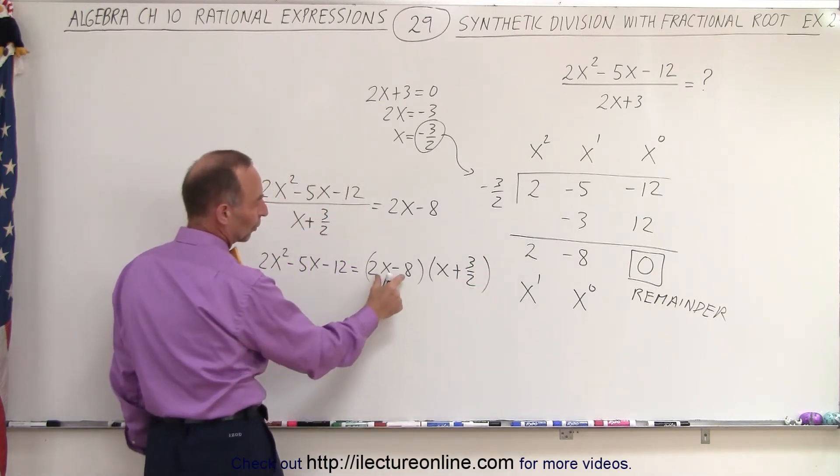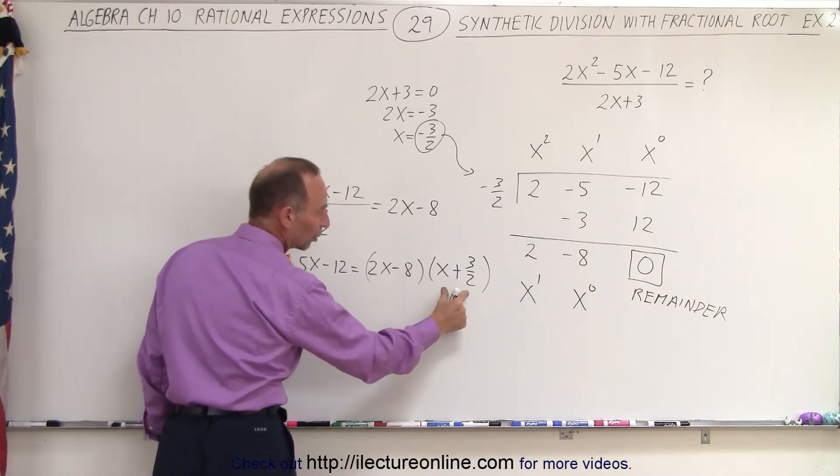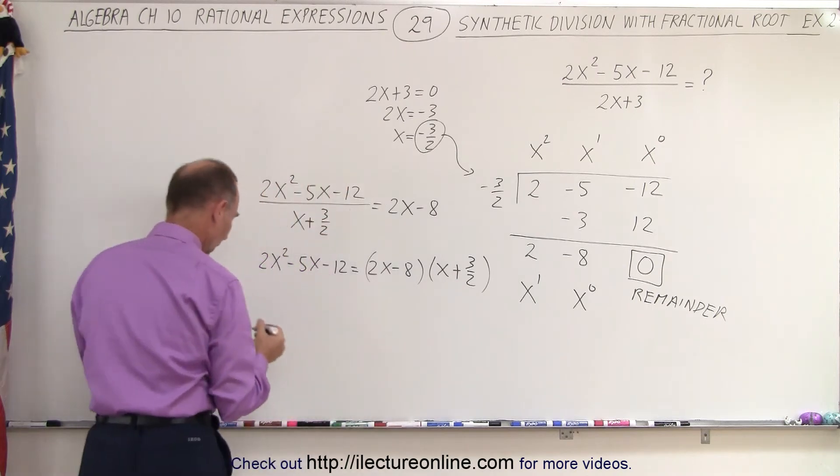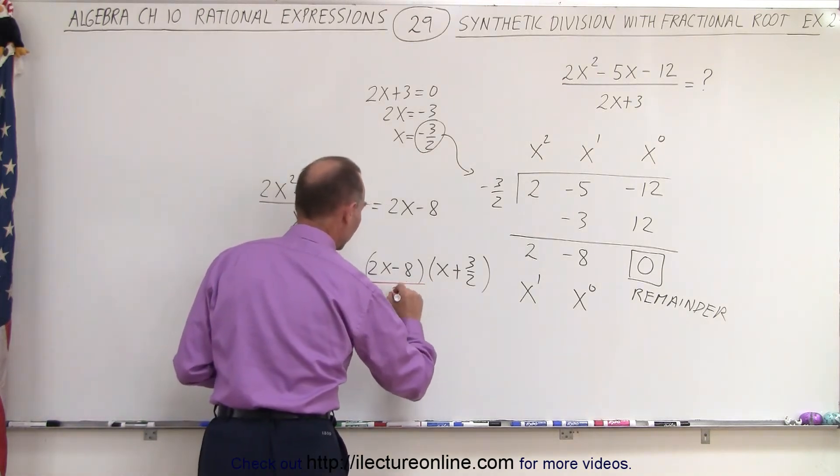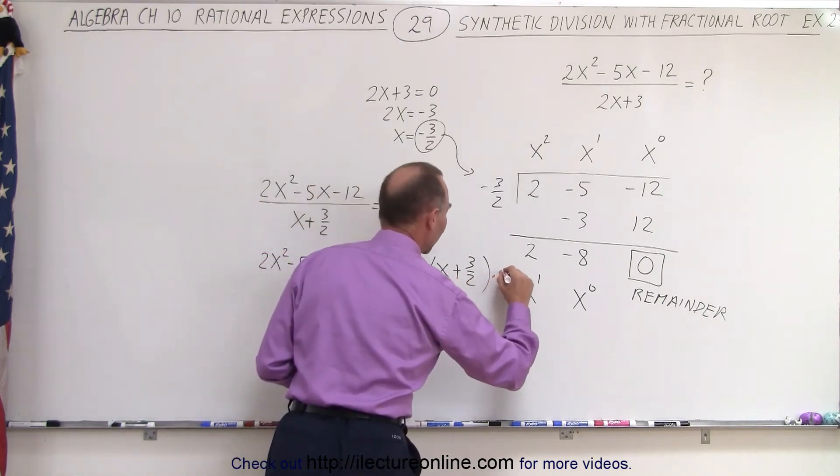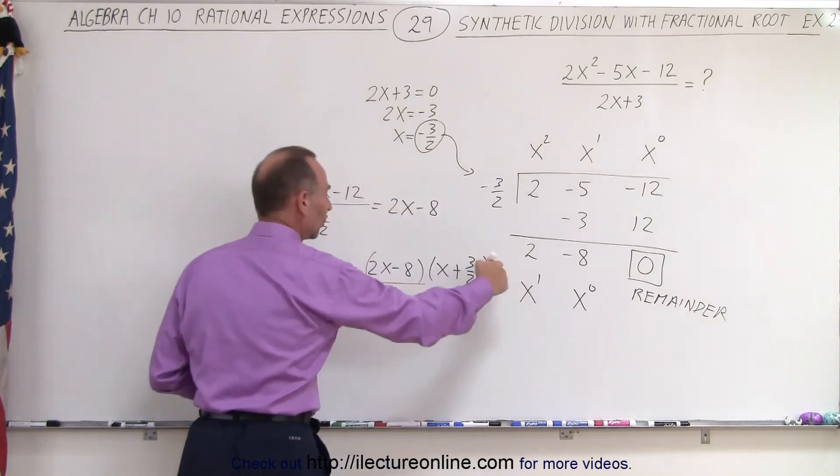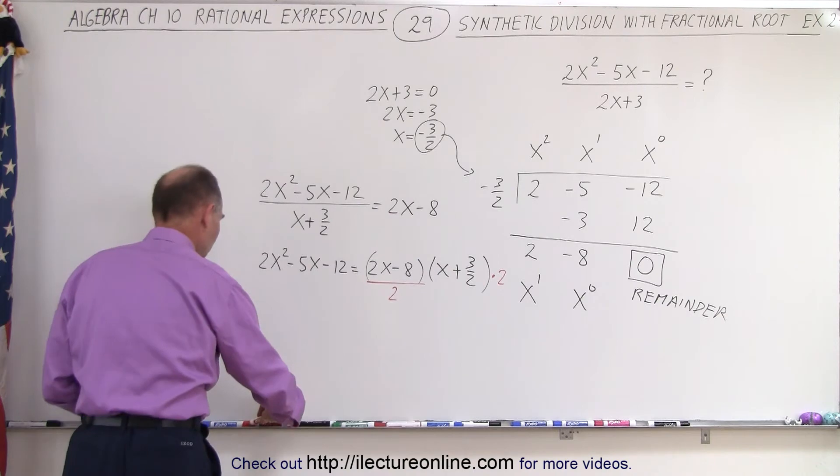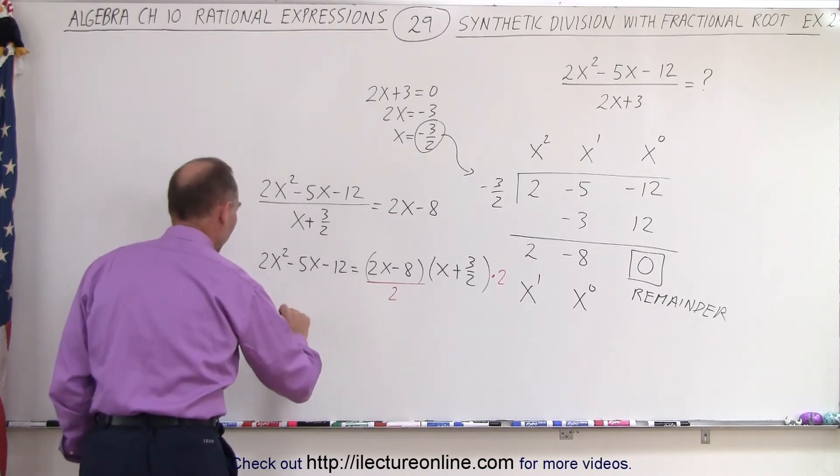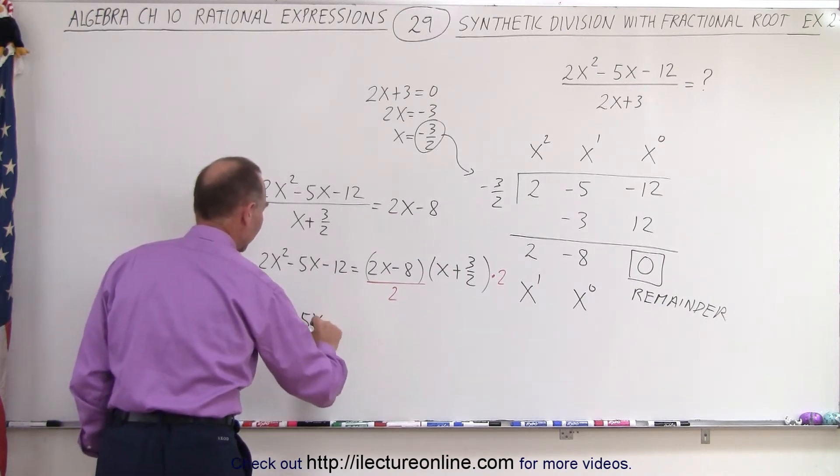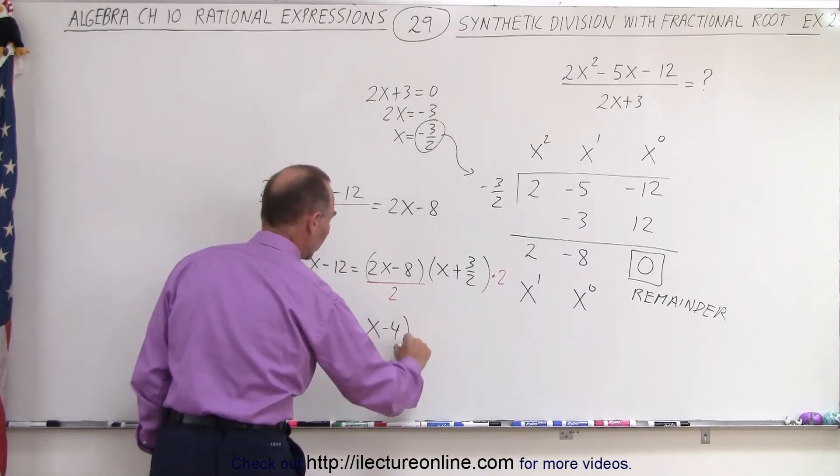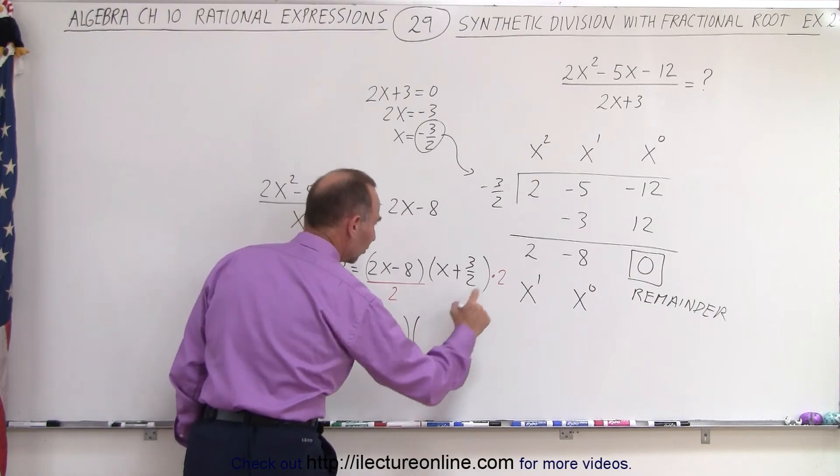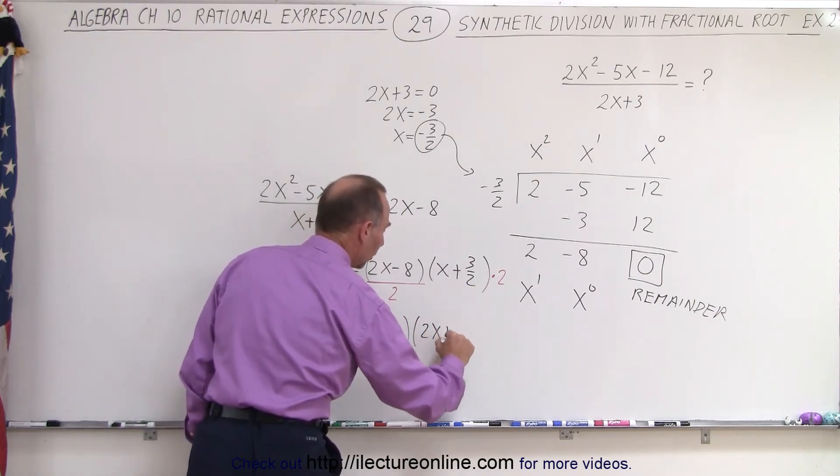And now what we're going to do is we're going to divide this by 2 and multiply this times 2. So let me write that in here. So here we're going to divide this by 2 and here we're going to multiply that times 2. That way we don't change anything, and when we make that change,